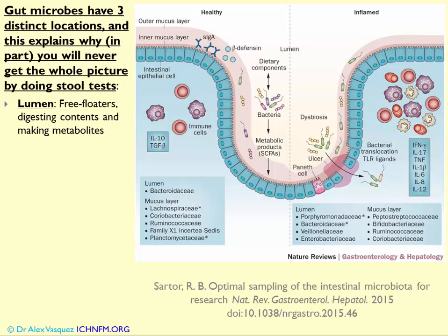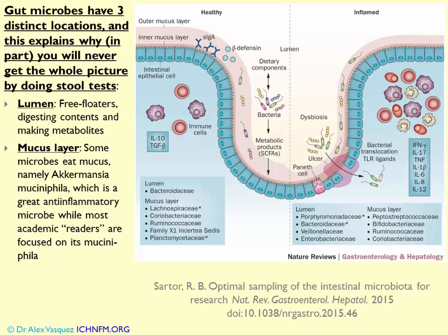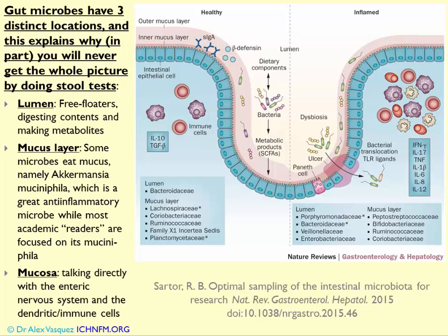What I want to show you in this diagram is a deeper understanding of these ideas. Some bacteria — some microbes — live in the lumen of the gastrointestinal tract; think of those as free floaters that digest contents and make metabolites living towards the center of the tube. Other microbes live in the mucus layer, swimming around in the mucus. One of these bacteria famous for consuming mucus is Akkermansia muciniphila — as you would guess from its name, muciniphila, it loves mucin. And some bacteria are directly on the mucosa, talking to the enteric nervous system, the immune system, and those individual dendritic cells projecting a little appendage out into the lumen sensing the climate within — food, phytochemicals, fibers, fatty acids, nutrients, and of course microbes.